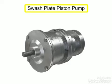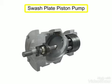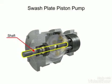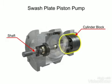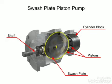A swashplate is a device used to translate the motion of a rotating shaft into the reciprocating motion of a piston. Swashplate piston pumps have a rotating shaft connected to a cylinder block containing pistons, which are pressed against a stationary swashplate that sits at an angle to the cylinder.